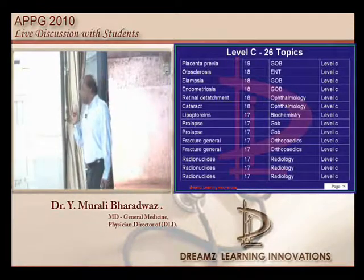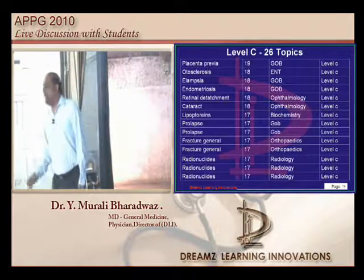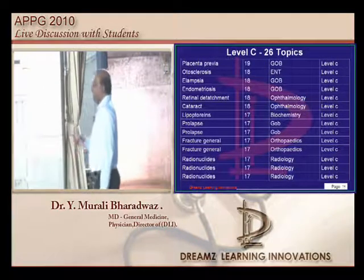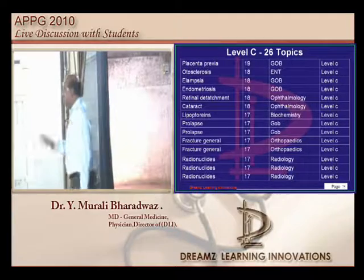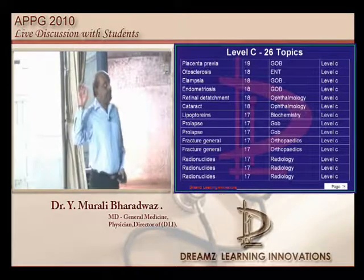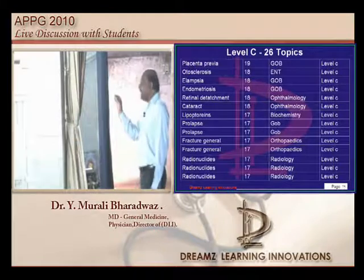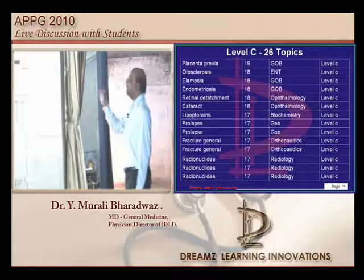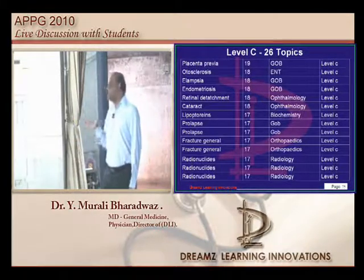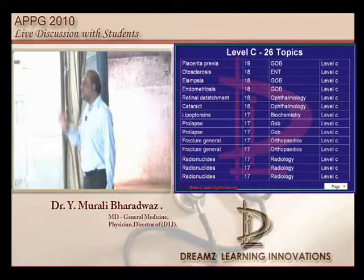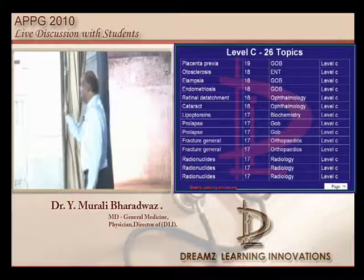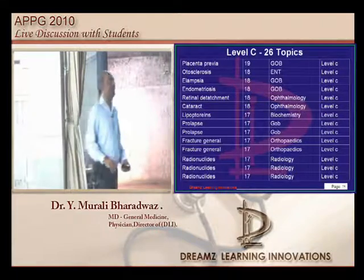Now there are Level C topics. What is the meaning of Level C? Around 15 to 20 questions came from these in the past 30 years — there are 26 topics. Any serious student will definitely answer at least 23 to 26 of them correctly. Let us see what happened.